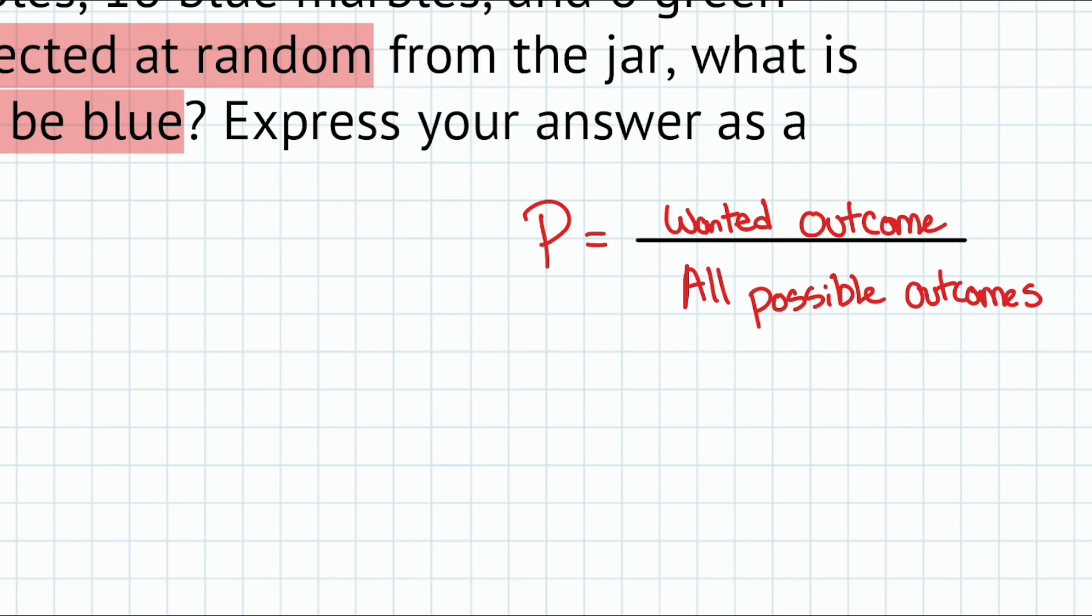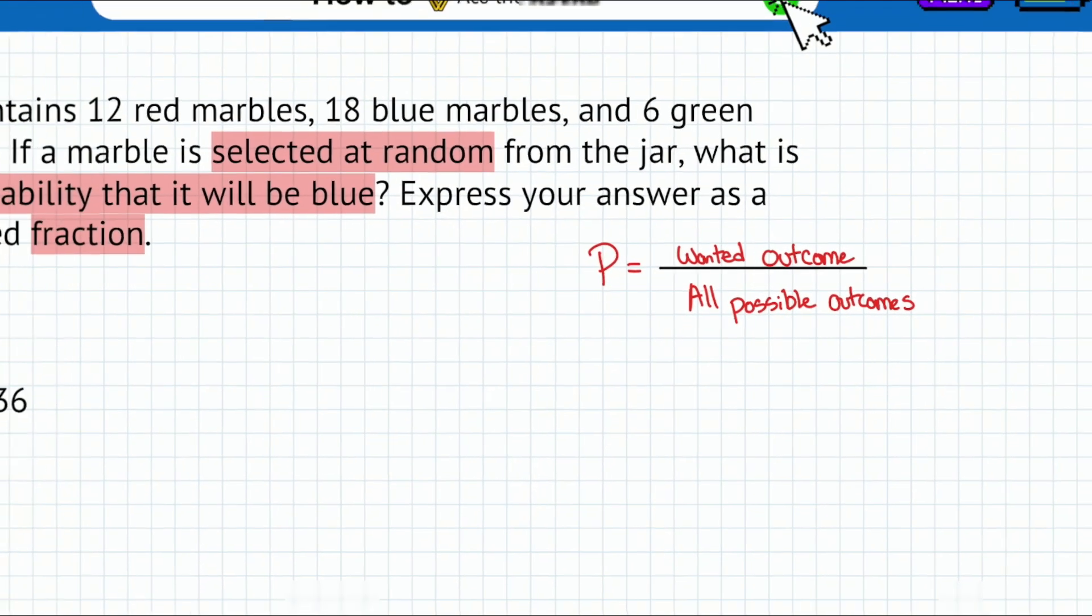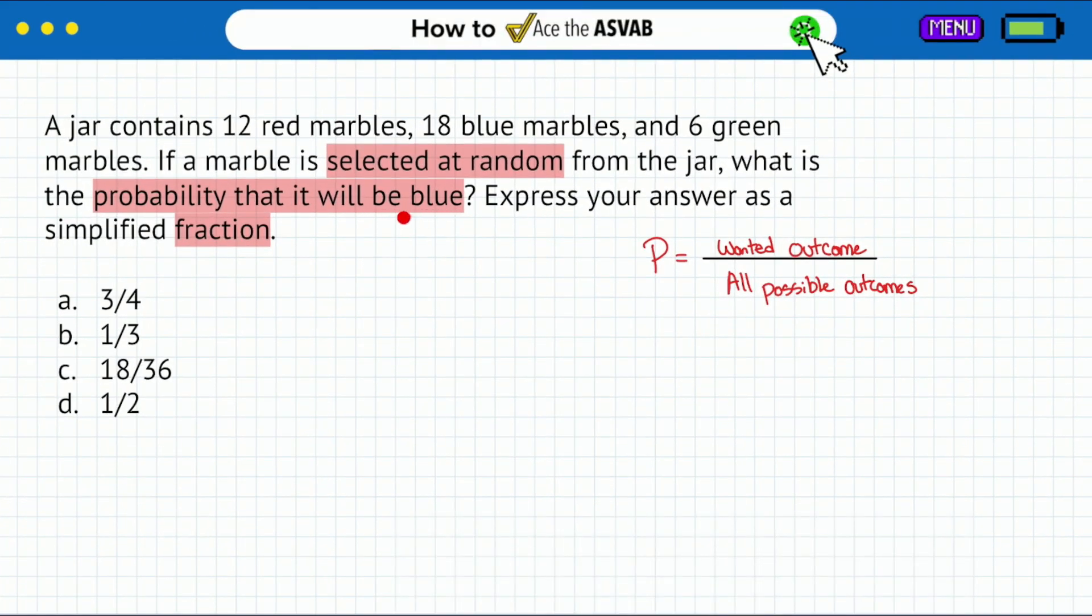Watch how this comes into play. This is actually going to be fairly straightforward. When you're asking yourself, what's the outcome that I want? Well, that outcome is blue. I want a blue marble selected at random. So my probability is going to be equal to blue over all marbles. How many blue marbles are there? We see that we have 18 blue marbles right there. We have 12 red, 18 blue, 6 green. I'm going to care about the 18 blue.